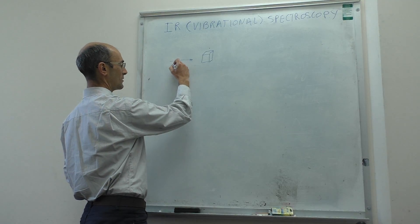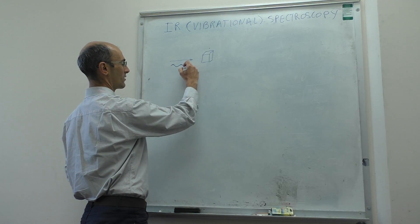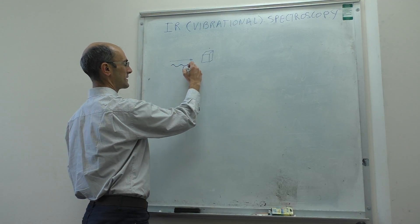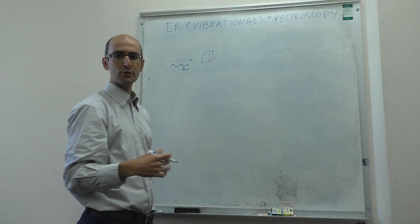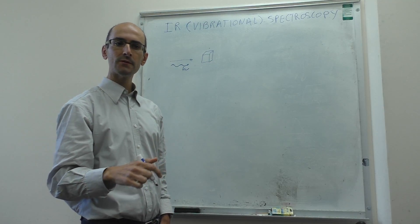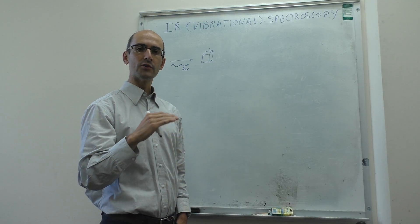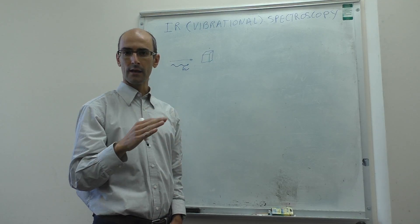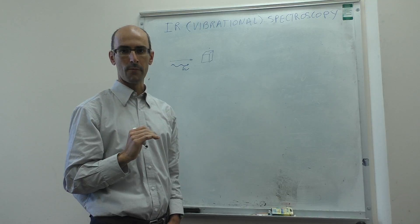You're going to be using photons that are going to be passing through that sample, and then if the sample absorbs photons, that should appear as a peak in your spectrum.